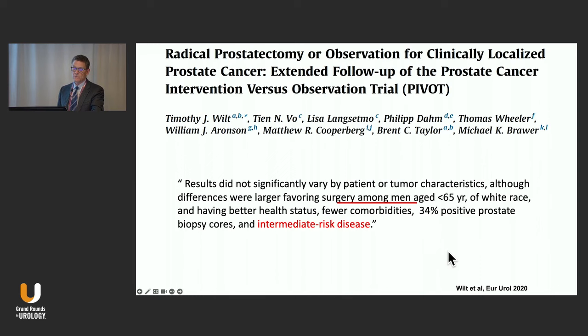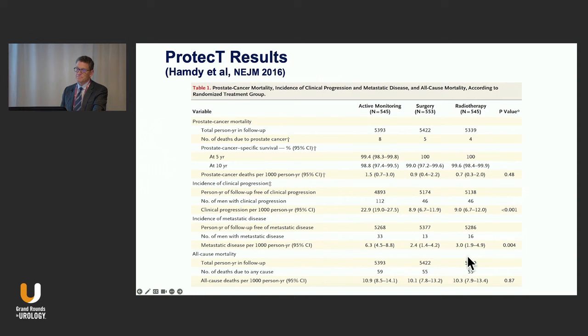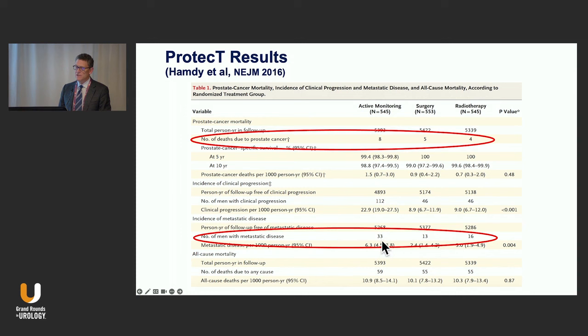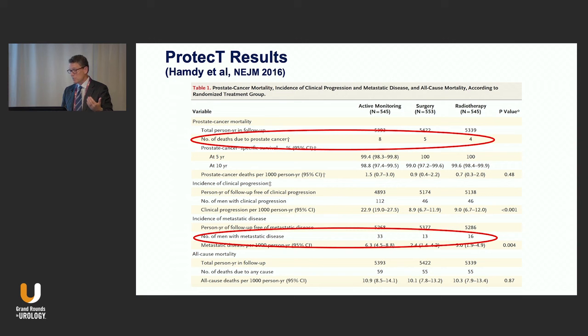Returning to the PROTECT trial, looking at the number of deaths due to prostate cancer in the active monitoring versus treatment arms — these are small numbers so it doesn't look significant — but the active monitoring group did have more deaths due to prostate cancer than either the surgery or radiation therapy group. Looking at the number of men with metastatic disease, there is a very significant difference (p=0.004). The observation interval was just over 10 years, and these intermediate risk patients are progressing — some developing metastases at a higher rate than treated patients, with the mortality differential emerging relatively early.